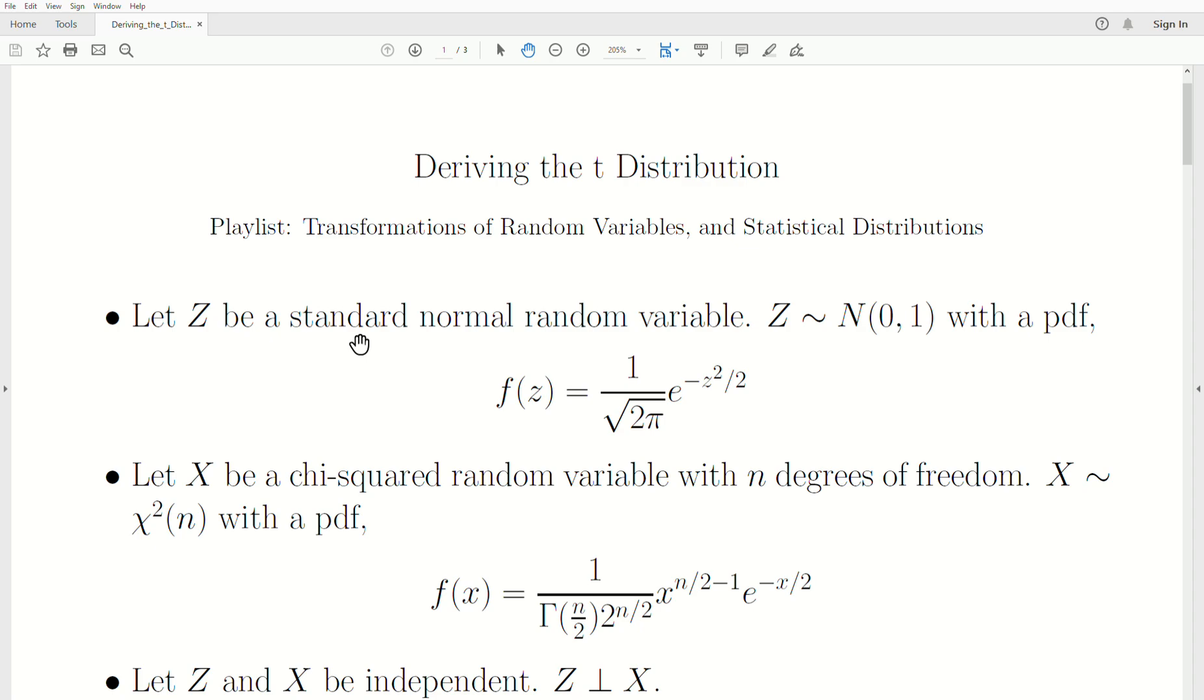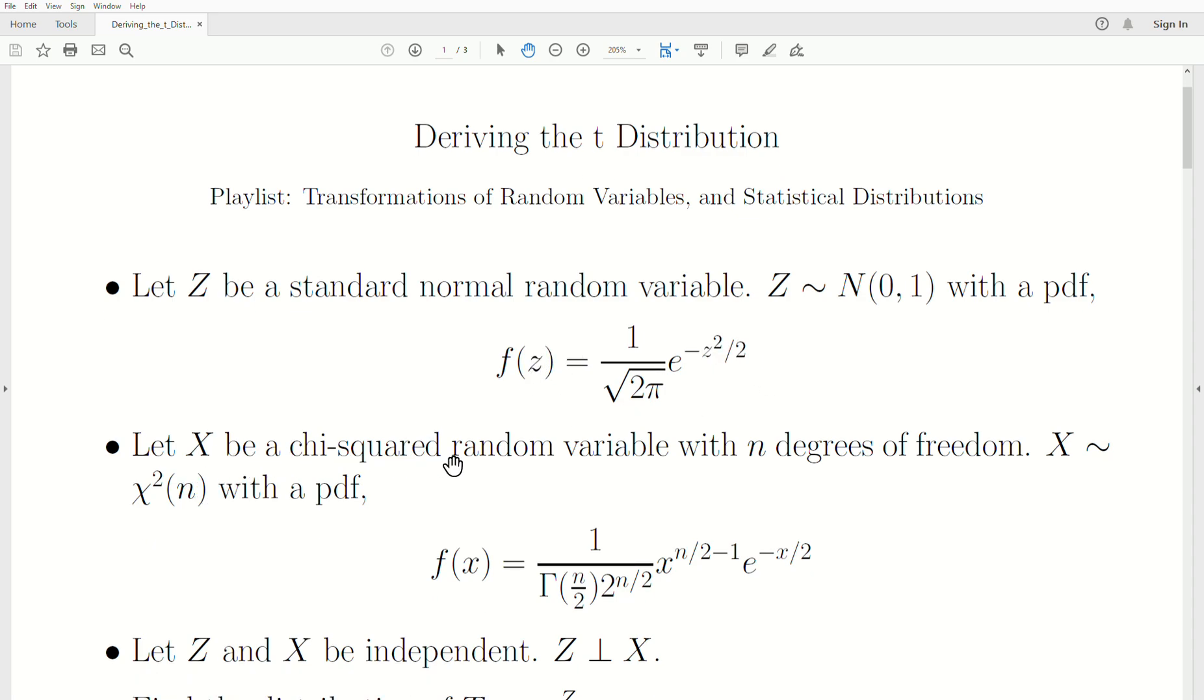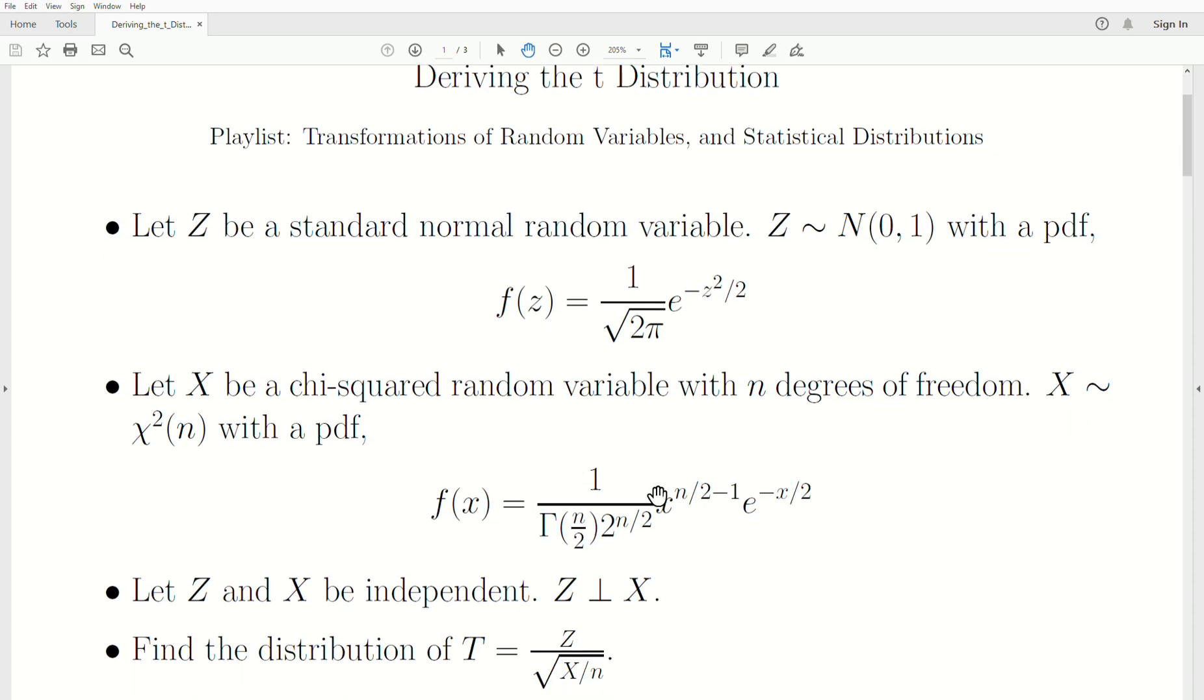Let Z be a standard normal random variable with PDF given by this. Let X be a chi-squared random variable with n degrees of freedom and PDF represented by this.